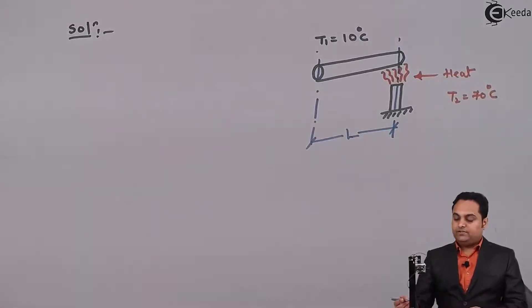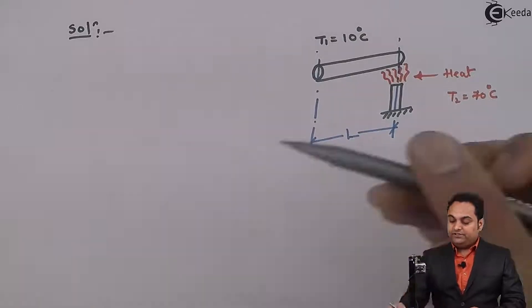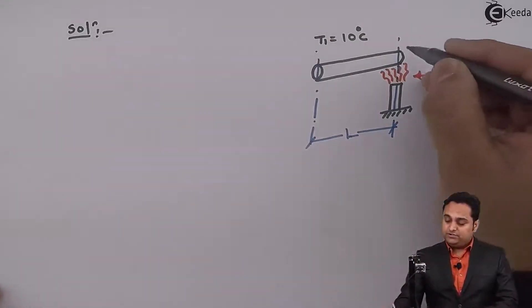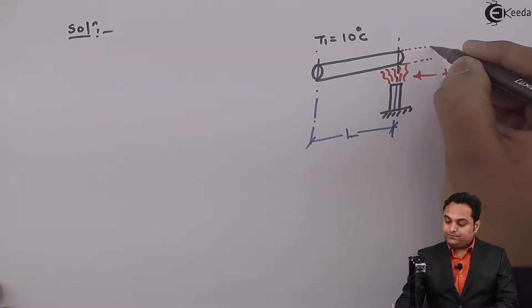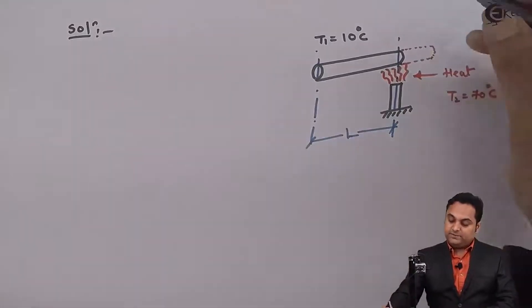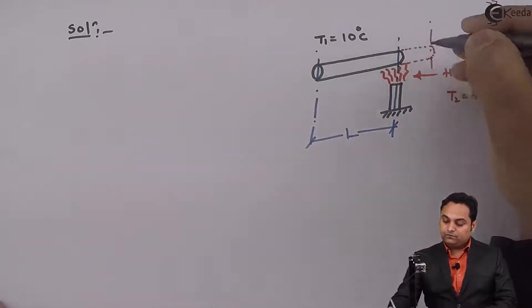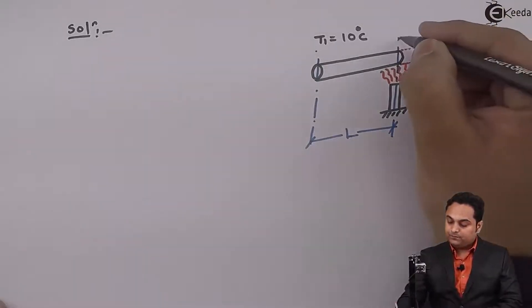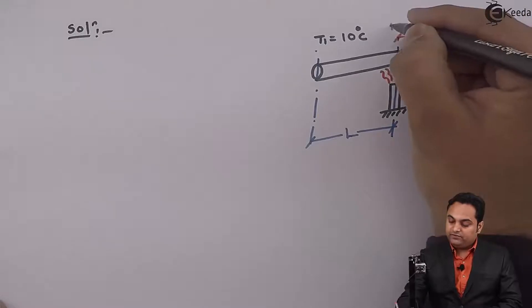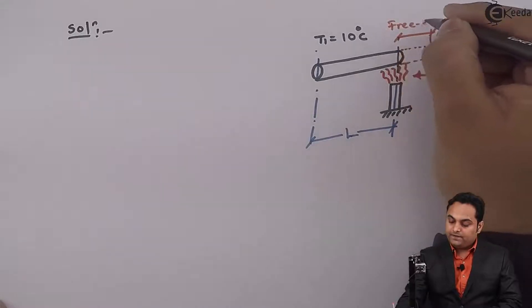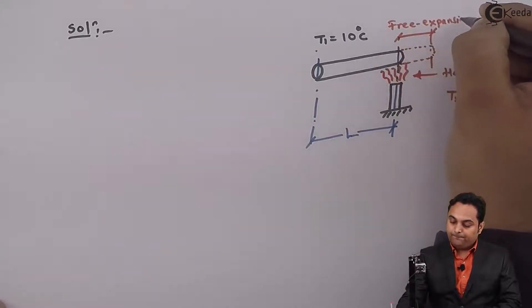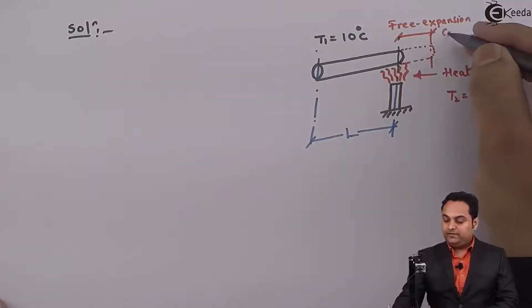Next, as the rod is made up of metal, then because of the heat, there are chances of this rod to expand. And this expansion of the rod is called as free expansion, denoted by delta L.